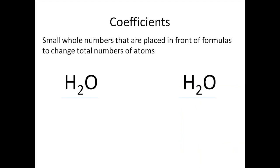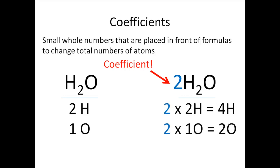In order to even out the numbers of atoms on each side of the equation, we need to change the coefficients within the equation. Coefficients are small, whole numbers that are placed in front of formulas to change the total number of atoms. In H2O, we have two atoms of hydrogen and one atom of oxygen. If we put a 2 in as coefficient in front of the formula, we will double the number of each atom present. There will now be four atoms of hydrogen and two atoms of oxygen.